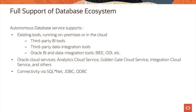Autonomous Database service supports existing tools running on-premises or in the cloud. These tools can range from third-party business intelligence tools, third-party data integration tools, or Oracle business intelligence and data integration tools like BIEE, ODI, etc. This service also supports Analytics Cloud Service, GoldenGate Cloud Service, Integration Cloud Service, and others. Customers can connect to Autonomous Database service via SQL*Net, JDBC, and ODBC.